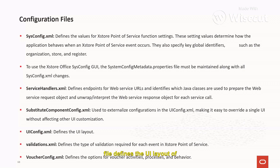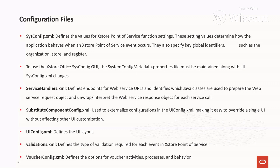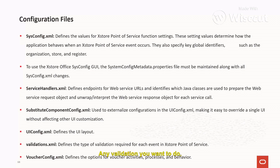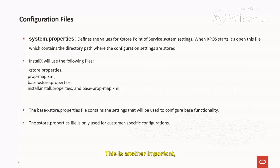The uiconfig.xml file defines the UI layout for any screen in Access Store — for example, modifying the store number or register number area at the bottom of the screen. The validation.xml file defines the type of validation required for each event; you define a Java class and reference it here. The voucher_config.xml file defines options for voucher activity, process, and behavior.